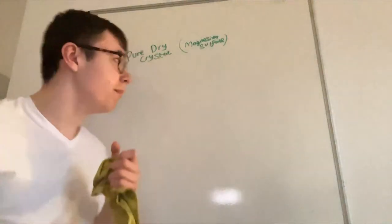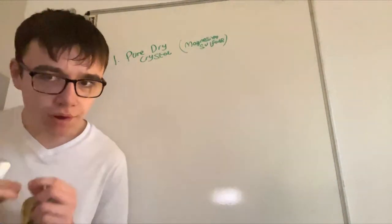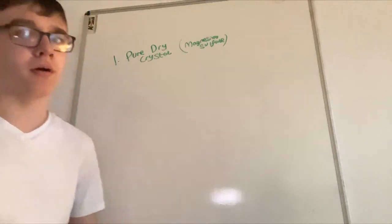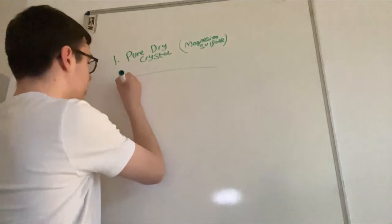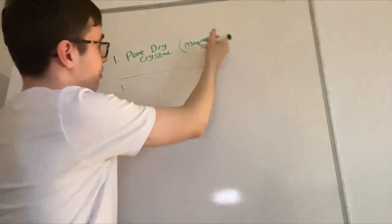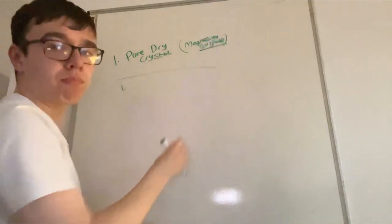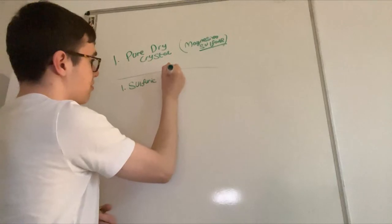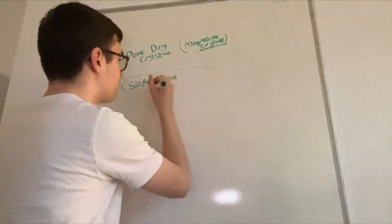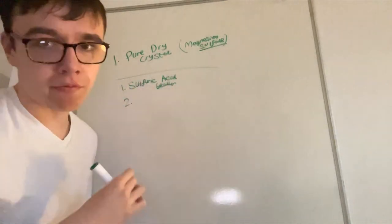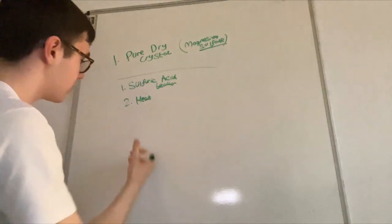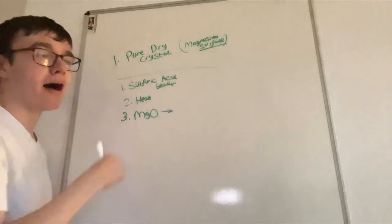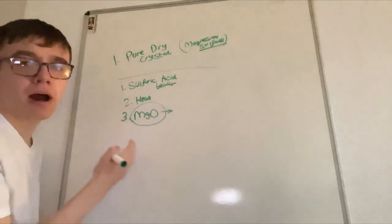The question is: how do you make a pure dry crystal of magnesium sulfate? Step one: pour your acid - sulfuric acid - into a beaker. Next, to increase the rate of reaction, heat it up. Then add magnesium oxide, and keep adding it in excess until there is only magnesium oxide left.